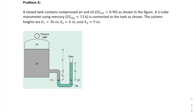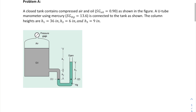Hello everyone. As you can see, this is one of the problems I have shown in class. Basically, the problem says that you have a closed tank containing compressed air and oil. The specific gravity of oil is given to be 0.90, and you have a U-tube manometer using mercury with a given specific gravity, connected to the tank as shown in the figure below.